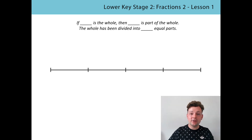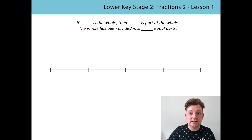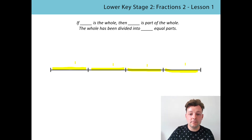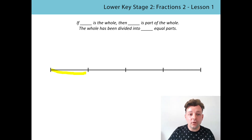This time we're going to continue to look at how wholes can have any amount of equal parts in them, but this time we're going to look at a line. How many equal parts can you see on my line? Pause the video and count with your finger on the screen. Did you find four equal parts? We've got one, two, three, four equal parts altogether. I'm going to highlight one of those parts. If the line is the whole, then this is part of the whole. The whole has been divided into four equal parts.